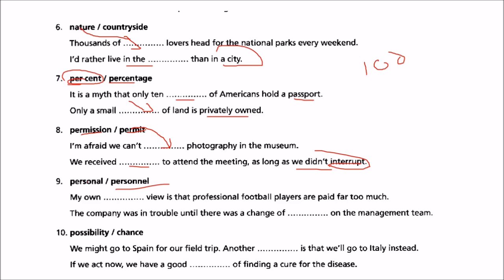Personal and personnel are often confused, especially in government work. My own personal view is that professional football players are paid far too much — 'personal' means individual or one's own. While: the company was in trouble until there was a change of personnel on the management team — 'personnel' refers to people within a company or organization.